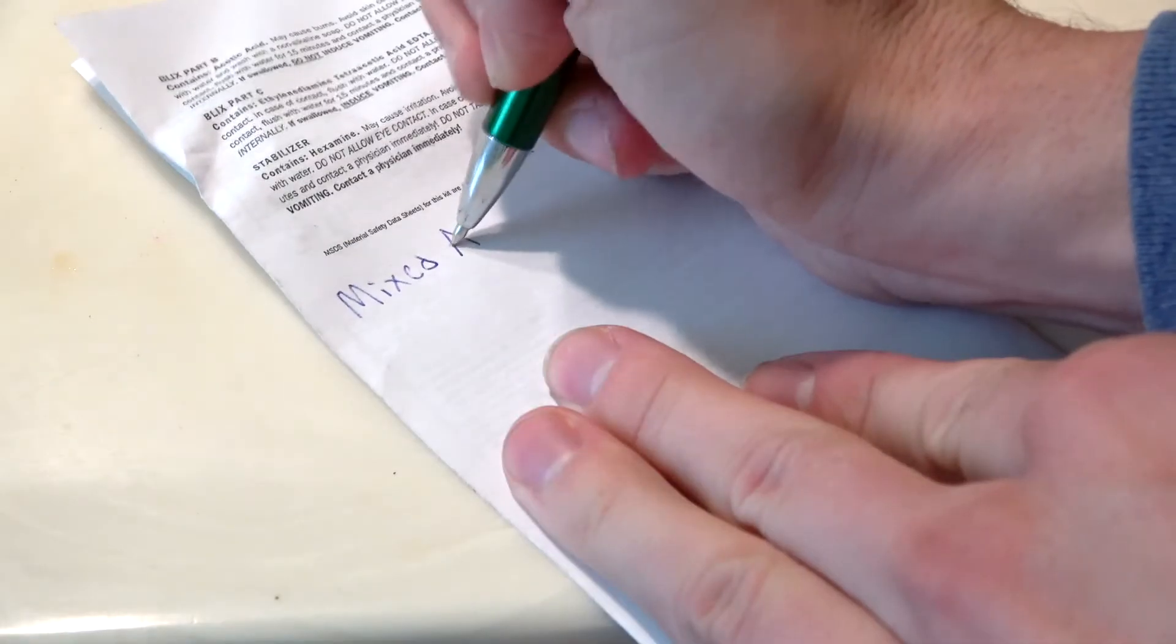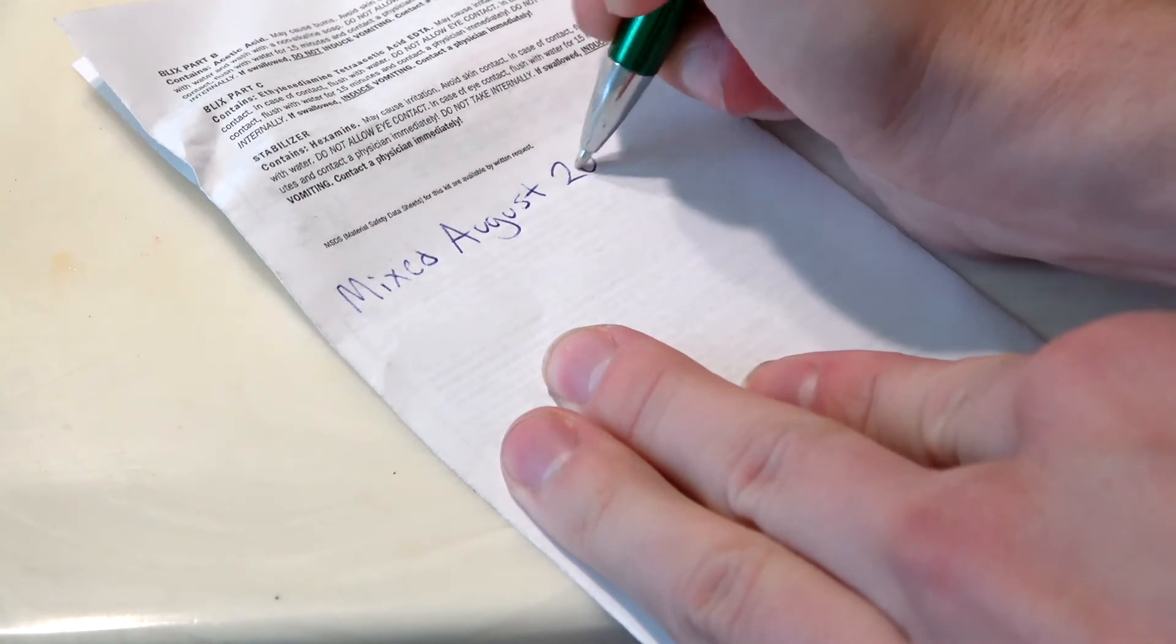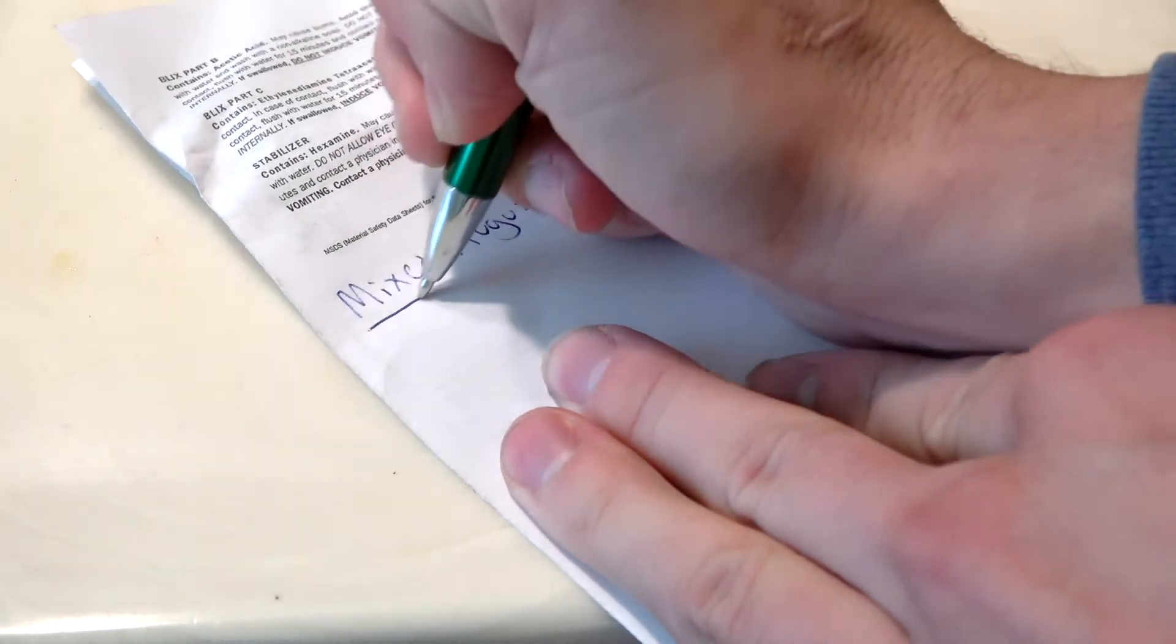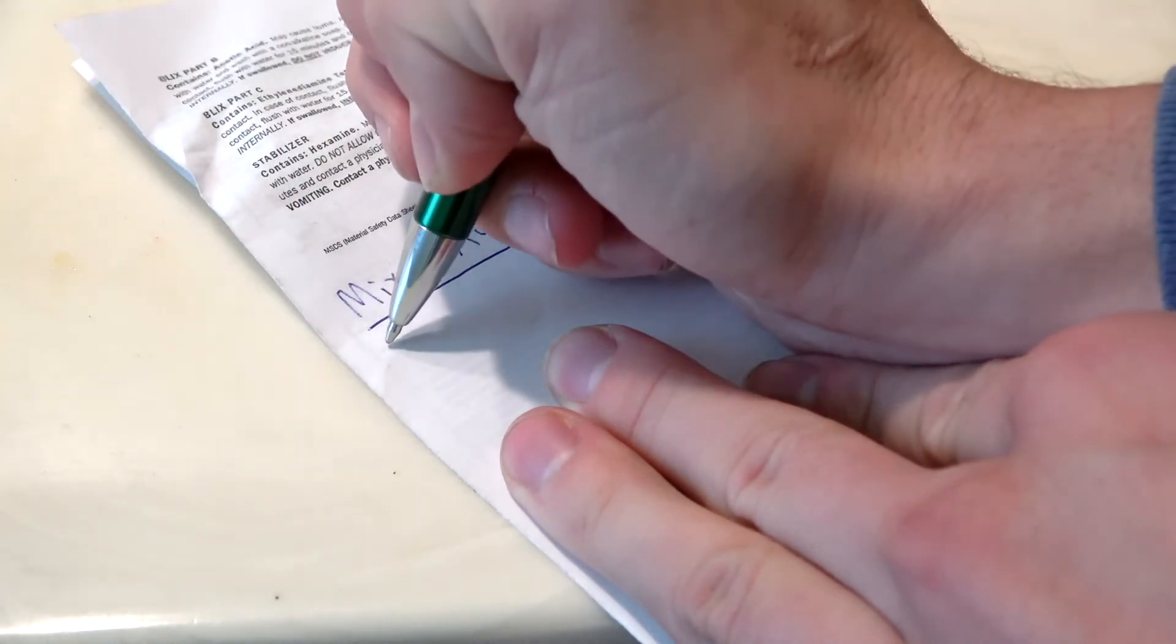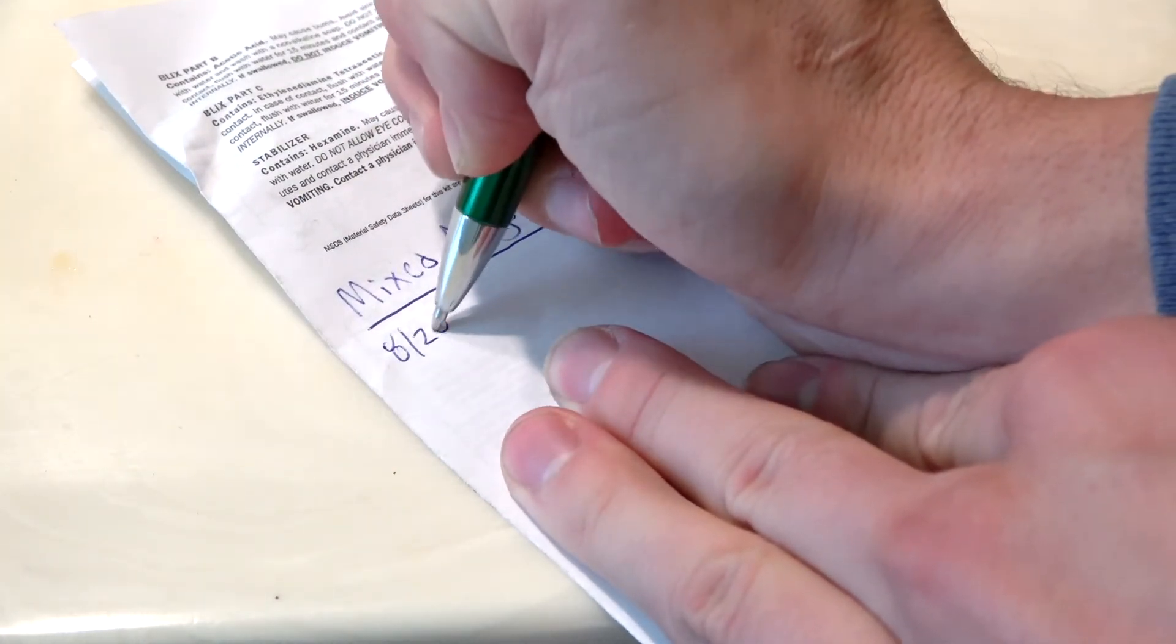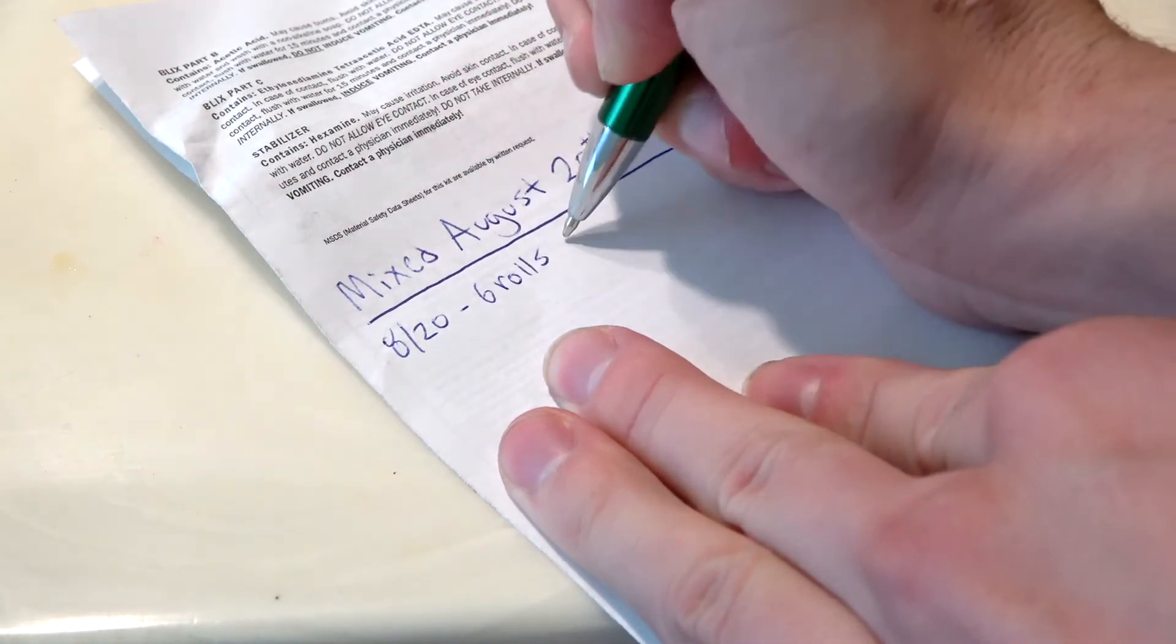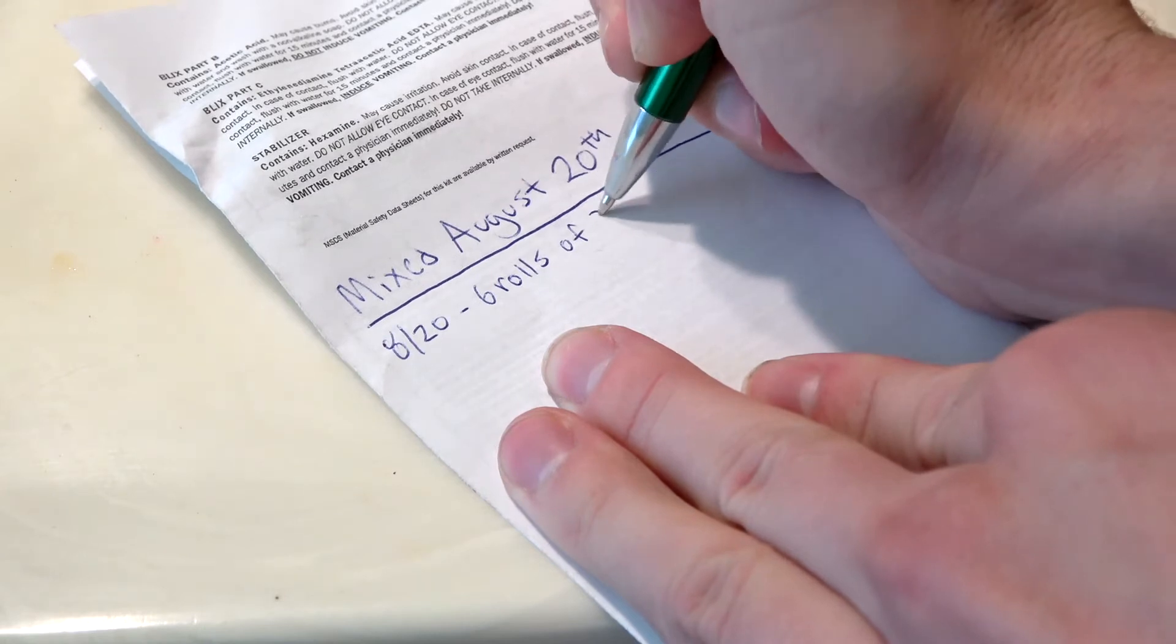Always keep a list stating when you mixed your chemistry and how many rolls you've developed with your chemistry. I try to never go past two months with any of these C41 or E6 kits. Your results may vary, but I once developed some film and had it come out blank, so that scared the poop out of me and I won't be doing that again.